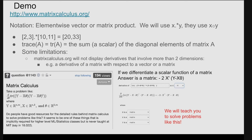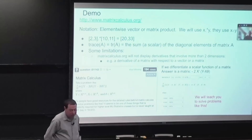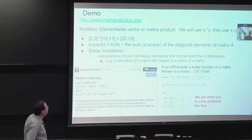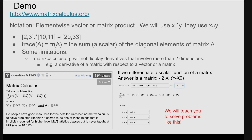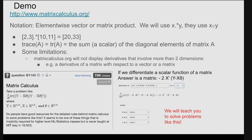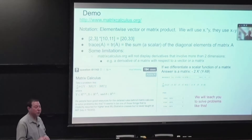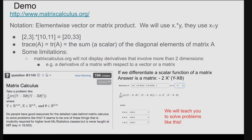Now we're leaving the world of scalar calculus and entering matrix calculus. Just a little notation: I like to use the Julia notation for element-wise product of vectors — dot times, or pointwise times. So two, three pointwise times ten, eleven is twenty, thirty-three. Some people use a dot with a circle around it to indicate pointwise multiply. I'll also remind you that the trace of a matrix is: if you have a big square matrix, you look at the diagonal, add up all the numbers, and that's the trace.